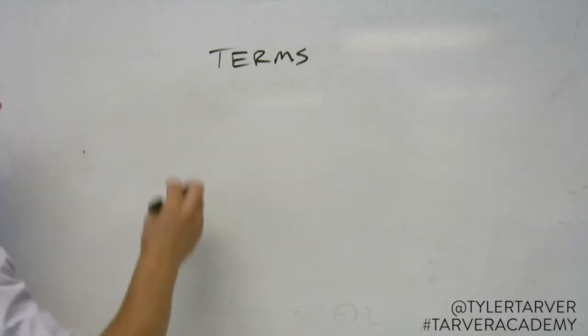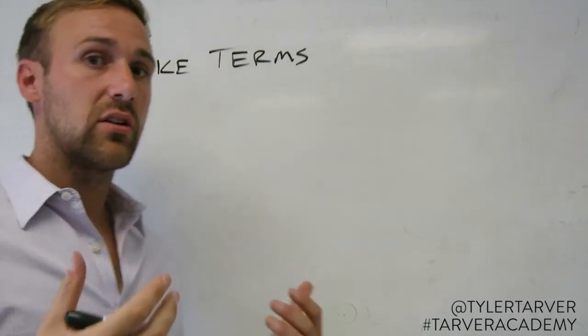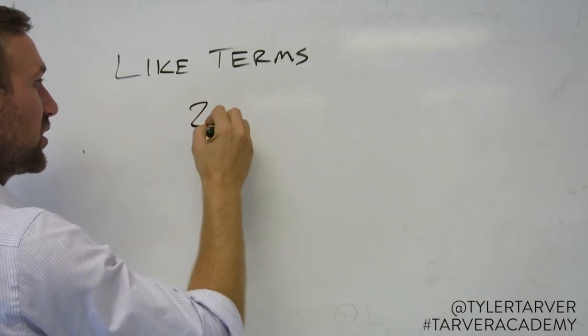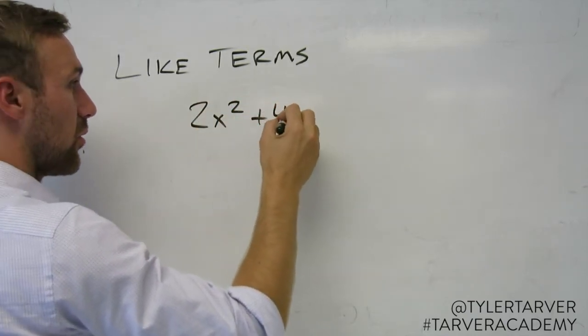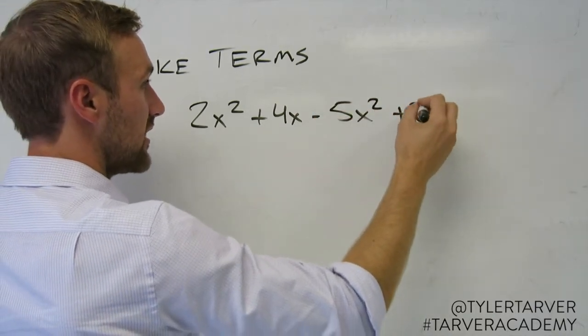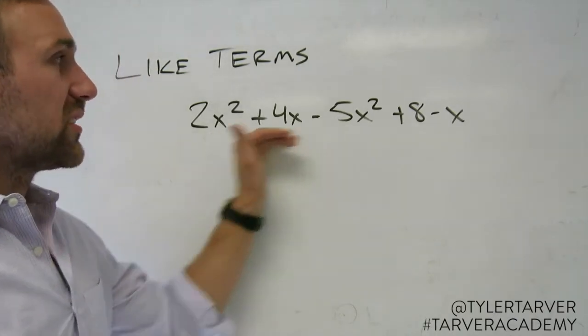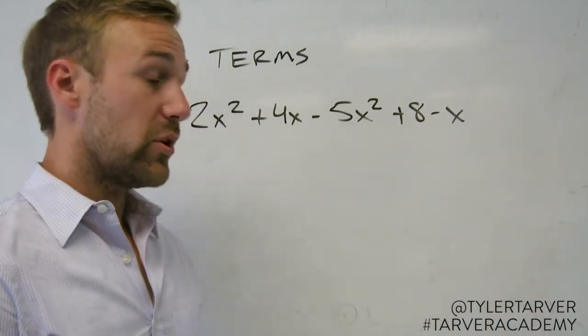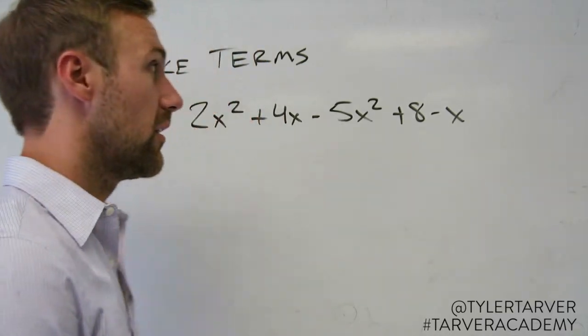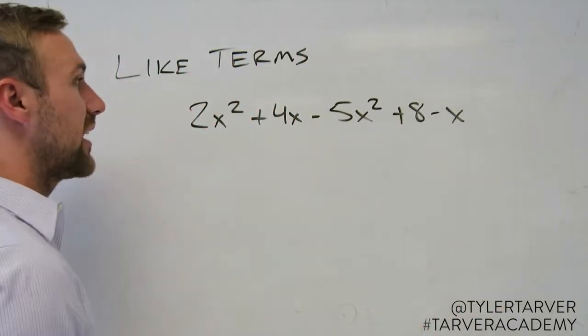Now, the things I want to talk about now are called like terms. That means they are similar. So say you've got 2x² + 4x - 5x² + 8 - x. We want to simplify this. When you simplify this, it's called combining like terms.